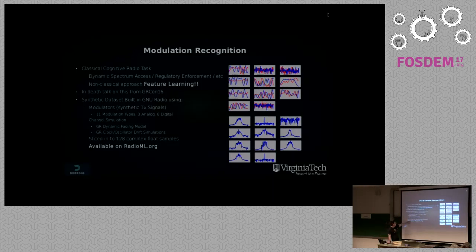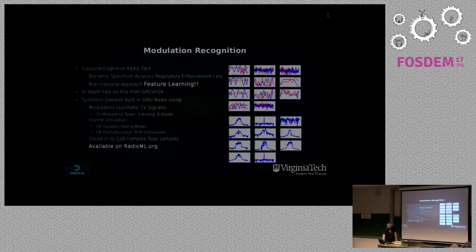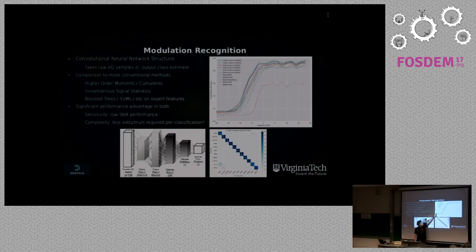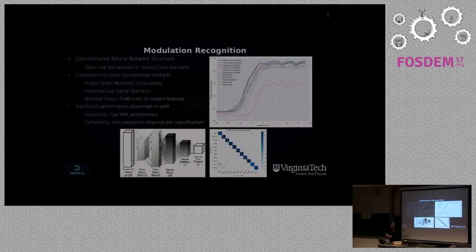We have a dataset on the website generated using GNU Radio — synthetic signals through synthetic channels using a dynamic fading model. The approach is a small convolutional neural network used for classification. Looking at performance: the solid curves are different variations of the feature learning approach taking raw samples, and the dotted ones are classifiers using expert features like higher-order moments. In the best case for both, we get a three to four dB sensitivity improvement with the feature learning methods.